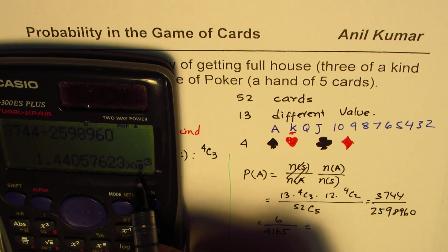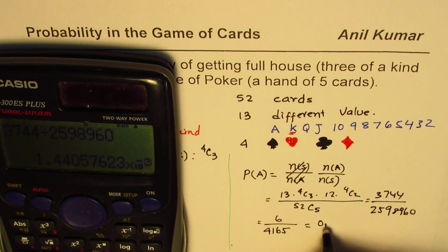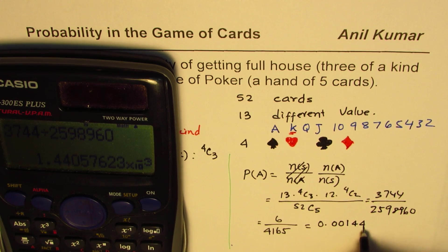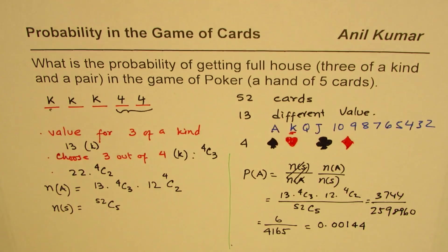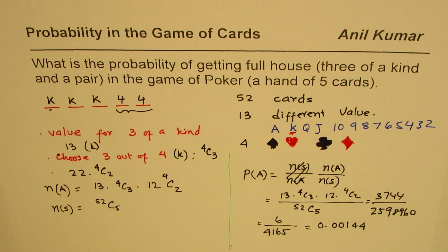And that gives us a probability of 6 over 4165, and in decimal numbers it is very small, 10 to the power of minus 3, of all this. That means 0.00144, right? So that is the probability of getting three of a kind and two of the other kind, and that is called full house.